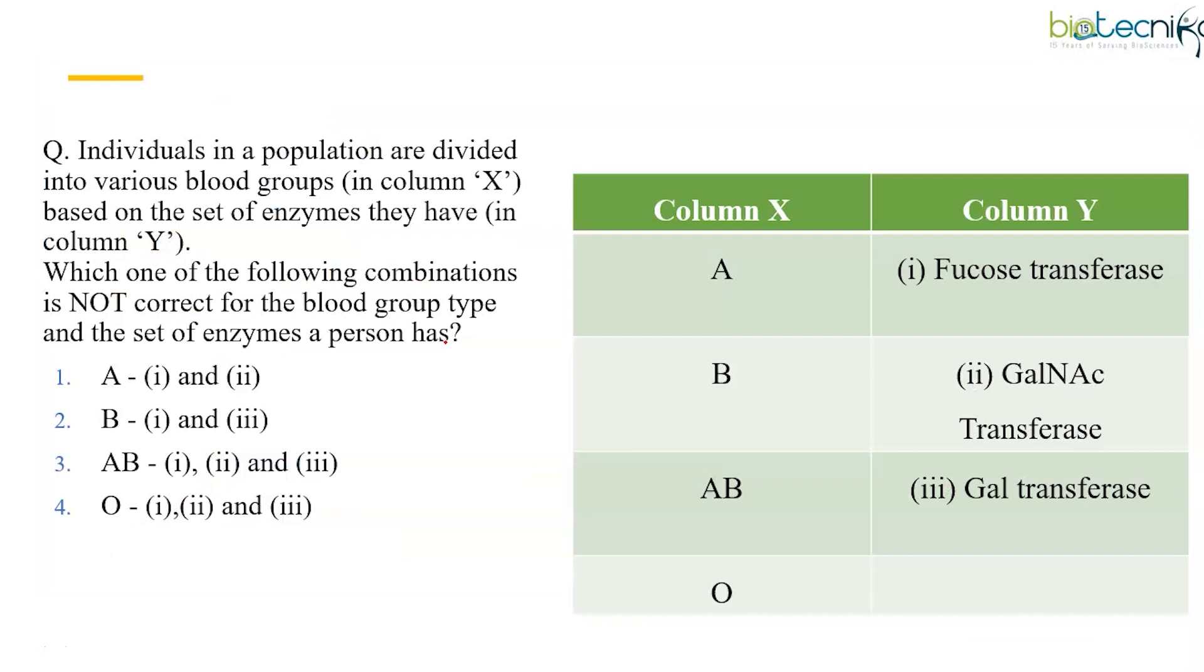Now this is about blood group antigens. As you can see, this is a simple match the following question. In column X, blood group antigens are provided, and in column Y, the corresponding enzymes are provided. But what is asked is more important. Here you need to identify the incorrect combination of the blood group type. Usually when match the following questions come, they are asking us the correct combination, but in this question they are asking the incorrect combination. You have to read the question thoroughly before getting into the answer. Here the incorrect combination is O with the combination of these three enzymes. Let's check out how the combination is incorrect.